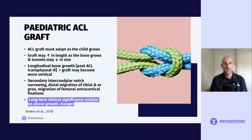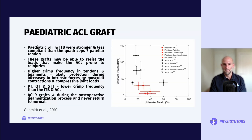The paediatric ACL graft must adapt as the child grows. The graft may increase in length as bone grows and the tunnels may decrease in size. Longitudinal bone growth may cause the graft to become more vertical, and there may be secondary notch narrowing, distal migration of tibial fixation, or proximal migration of femoral extracortical fixation. We're not yet sure of the long-term clinical significance of these changes, and ACL grafts tend to decrease during the ligamentization process and never fully return to their normal state.